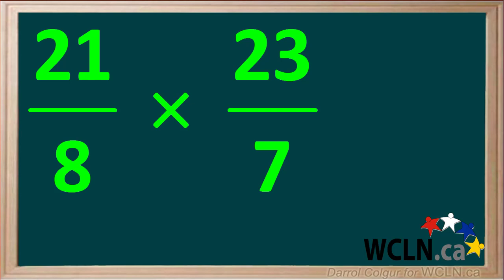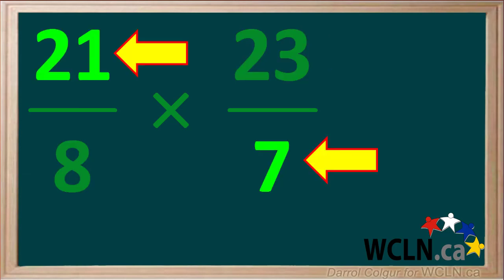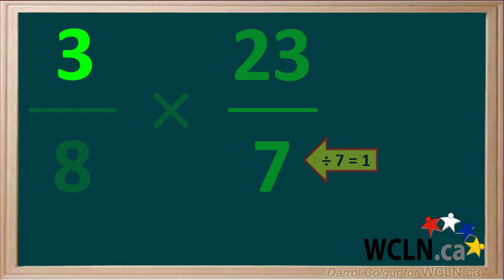Before we multiply these, it's important to check the diagonal numbers to see if we can simplify them. Checking the 23 and the 8, we see that no number will divide into both of these, so we can't simplify these. Now we'll look at the 21 and the 7. Both 21 and 7 can be divided by 7. 21 divided by 7 equals 3, and 7 divided by 7 equals 1. So we change 21 to 3, and 7 we change to 1.